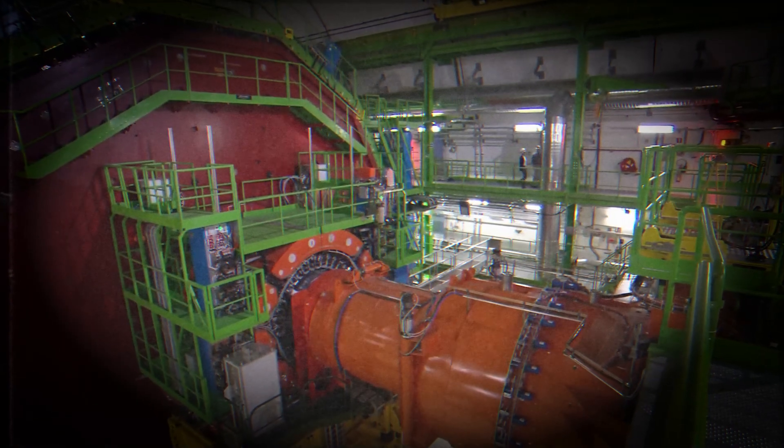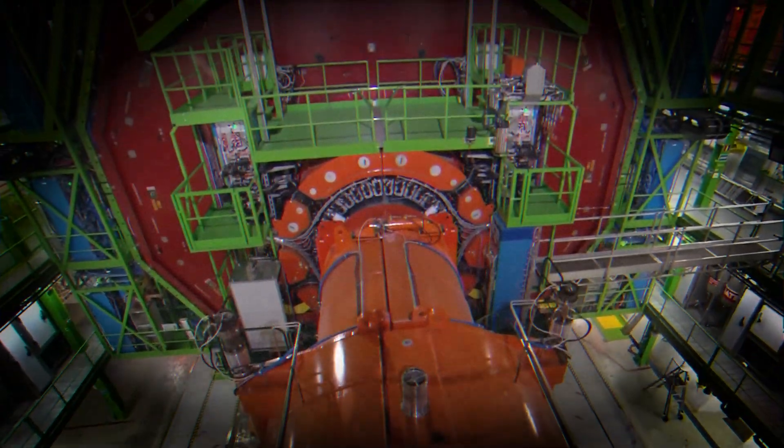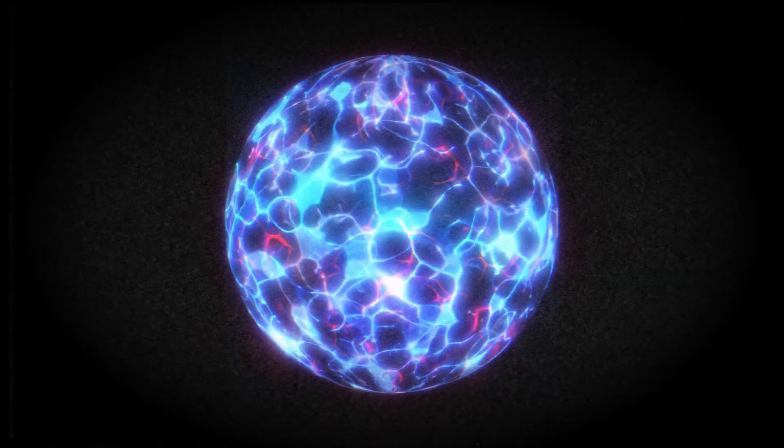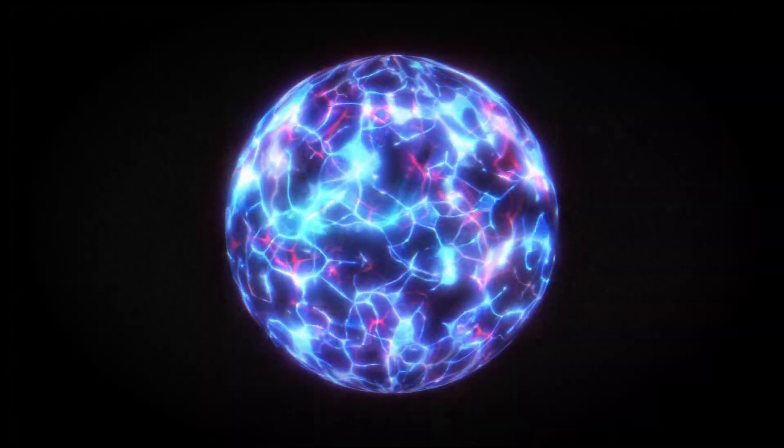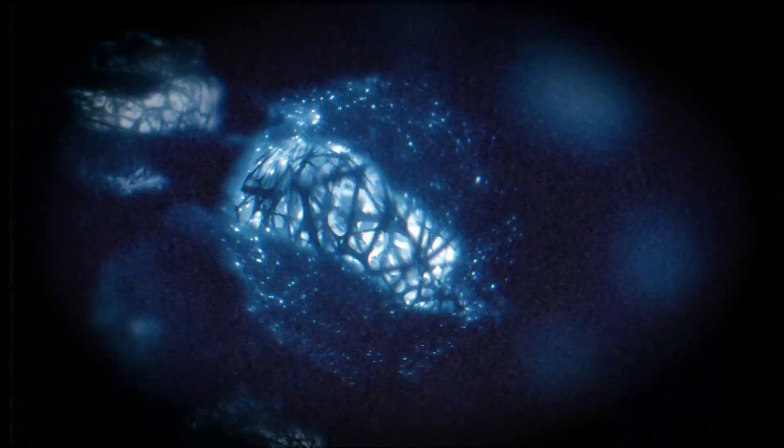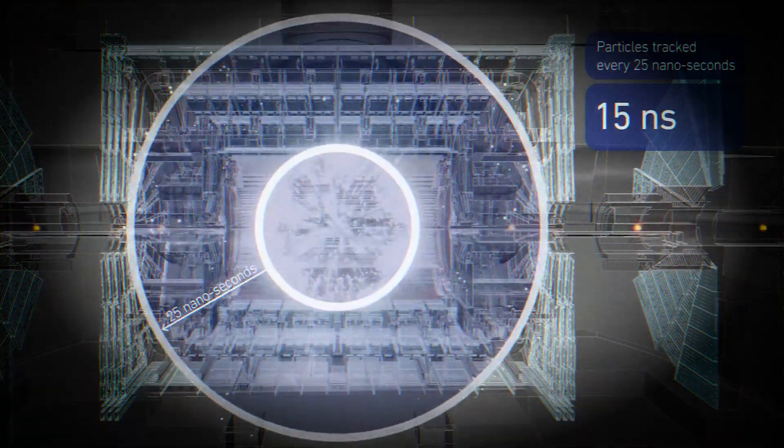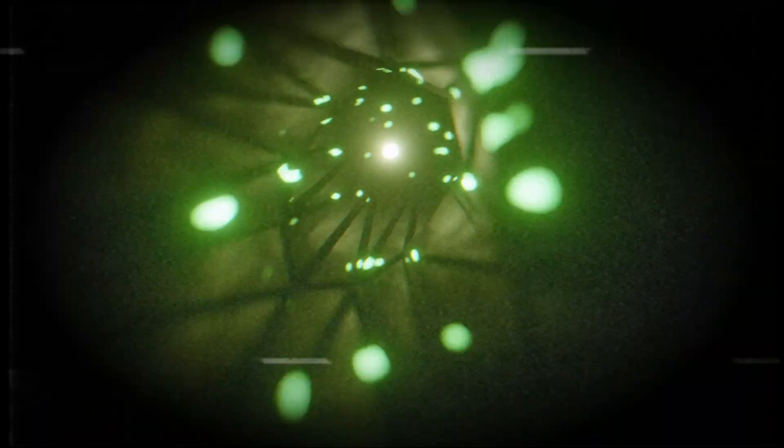CERN is one of the very few places on Earth where antimatter can be manufactured, tamed, and trapped long enough to be studied. Normally, antimatter is nature's most fleeting ghost. It vanishes the moment it touches ordinary matter, annihilated in a burst of light. But here, scientists have built specialized machines like the Antiproton Decelerator, a device designed to catch speeding antiprotons, slow them down, and corral them like wild horses.